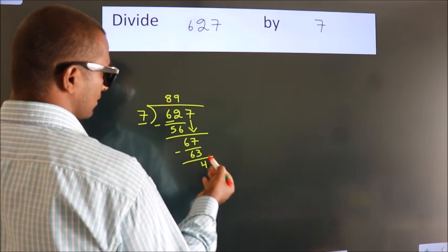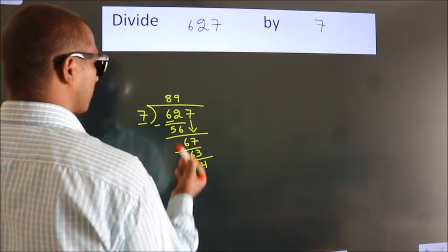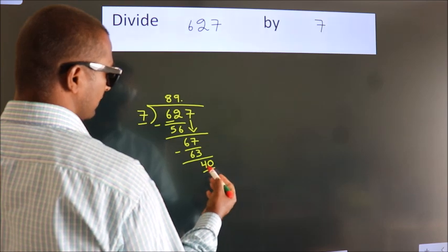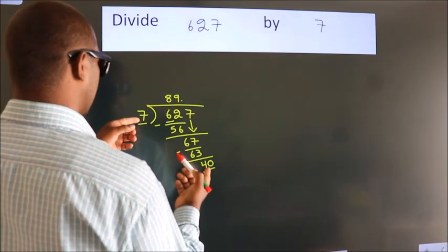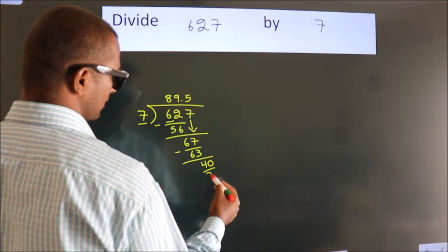After this, there are no more numbers to bring down. So what we do is put a dot and take 0, giving us 40. A number close to 40 in the 7 table is 7 times 5, which is 35.